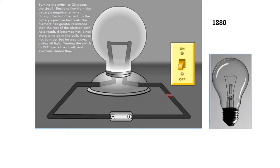The earliest vacuum tubes evolved from incandescent light bulbs containing a filament sealed in an evacuated glass envelope. When hot, the filament releases electrons into the vacuum, a process called thermionic emission. Turning the switch to ON closes the circuit. Electrons flow from the battery's negative terminal through the bulb's filament to the battery's positive terminal. Since there is no air in the bulb, it does not burn up but instead glows giving off light. These were invented during 1880.